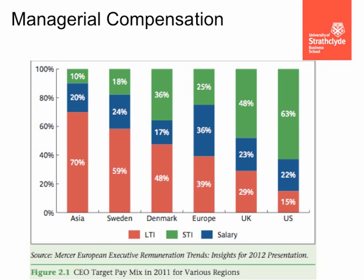Long-term incentives give the manager some equity that they're not allowed to sell for a few years — we call that restricted stock. Short-term incentives are performance bonuses. These are discussed in a lot more detail in the textbook.